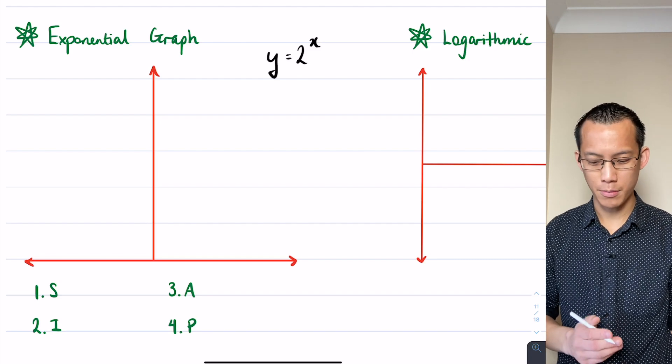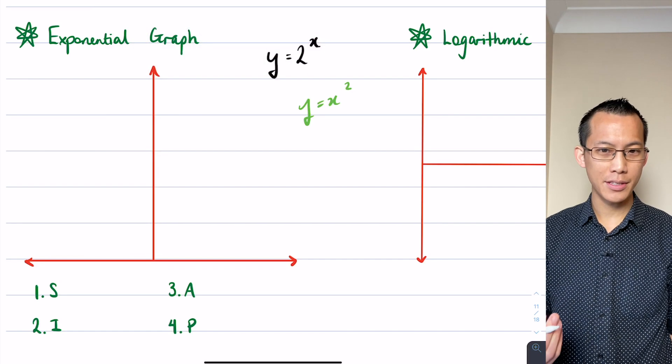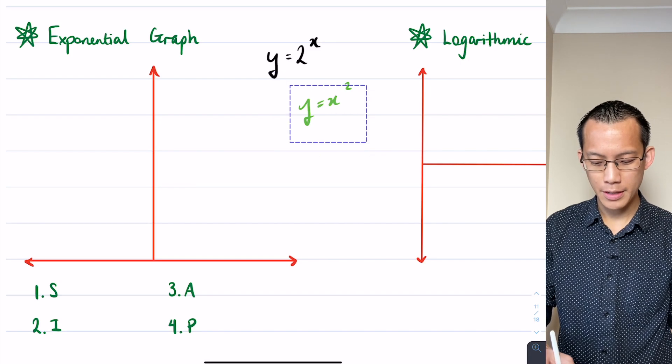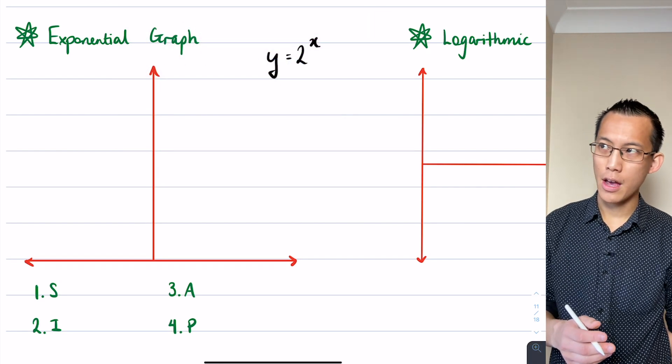We're familiar of course with x when you see it up there in the index - that's the giveaway that you've got an exponential curve of some kind, as opposed to a polynomial where the x is in the base.